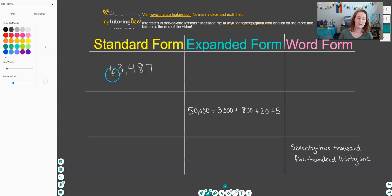So the six, since it is in the ten thousands place, is worth 60,000. That's going to be our first number. And then we're going to add on each additional value after that. The three is in the thousands place, so it's worth 3,000. And then the next digit is the four. The four is in the hundreds place, so it's worth 400.